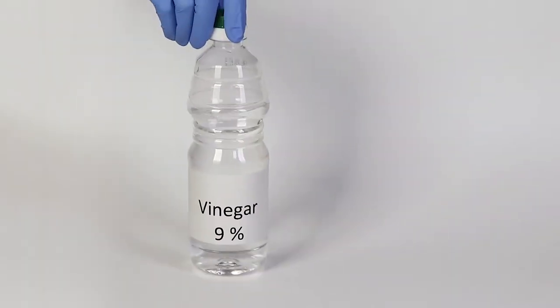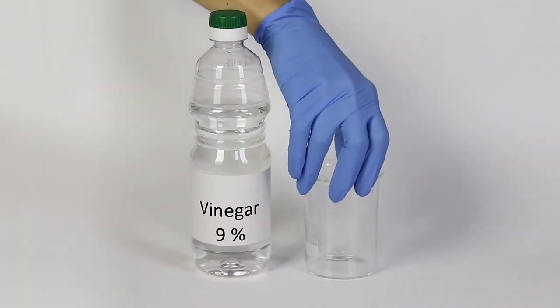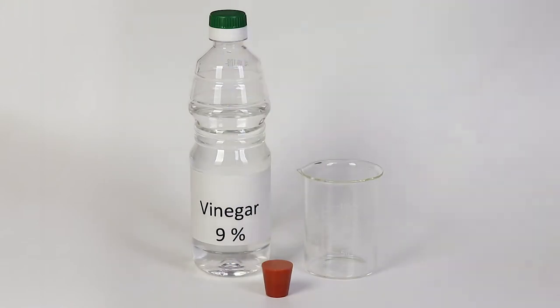For the rubber egg experiment, you will need a 5 to 10% vinegar solution, a beaker, a rubber stopper, and an egg.